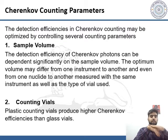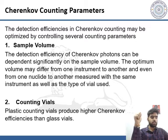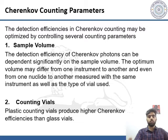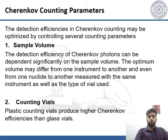The detection efficiency in terms of counting may be optimized by controlling several counting parameters. First is the sample volume. The detection efficiency of Cherenkov photons can depend significantly on the sample volume. The optimum volume may differ from one instrument to another and even from one radionuclide to another measured with the same instrument, as well as the type of vial used. The volume affects the pulse height spectral shape.